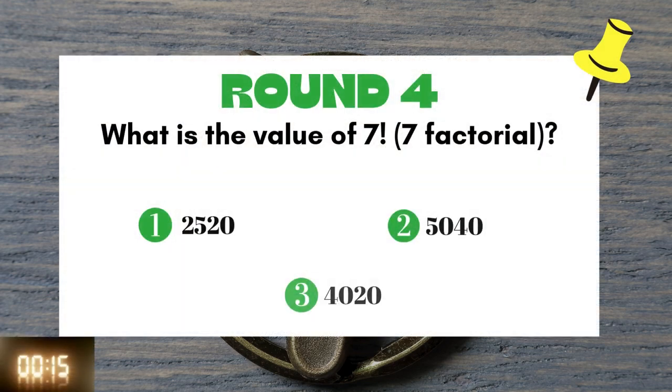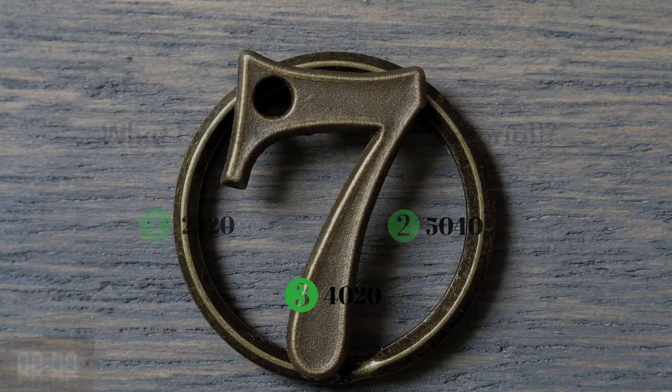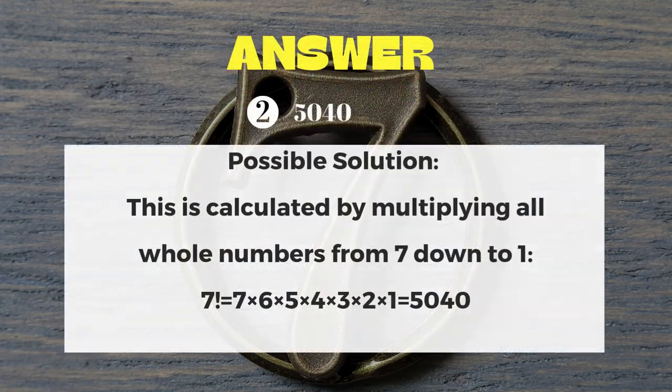Round 4: What is the value of 7 factorial? The answer is 5040.